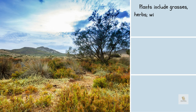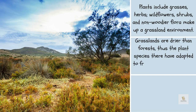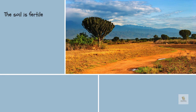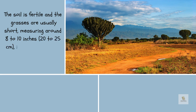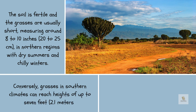Plants including grasses, herbs, wildflowers, shrubs, and non-woody flora make up a grassland environment. Grasslands are drier than forests, thus the plant species there have adapted to frequent precipitation or lack of water. The amount of rainfall in a certain location determines the height of the plants. The soil is fertile and the grasses are usually short, measuring around 8 to 10 inches (20 to 25 centimeters), in northern regions with dry summers and chilly winters. Conversely, grasses in southern climates can reach heights of up to 7 feet (2.1 meters).